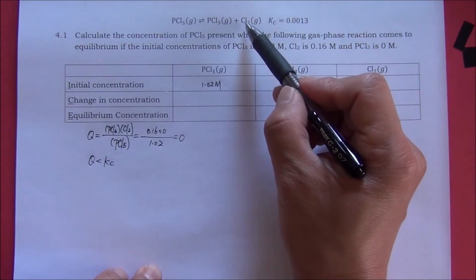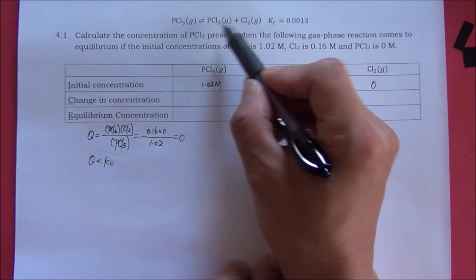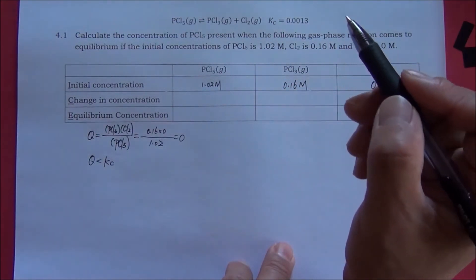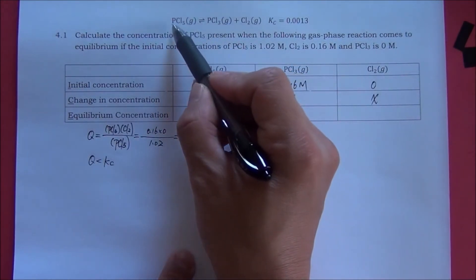Therefore, the concentration of the products should increase. Because the coefficients for both products are 1, we will assume the increase will be x for both. And the coefficient for the only reactant is 1.